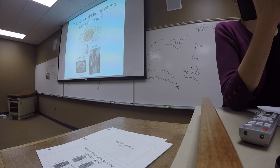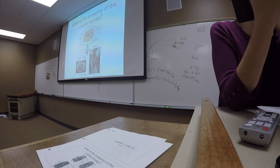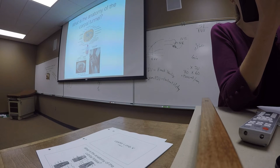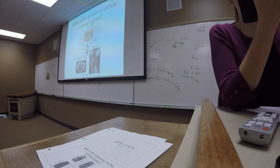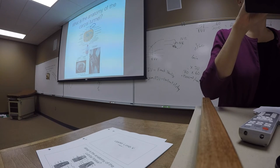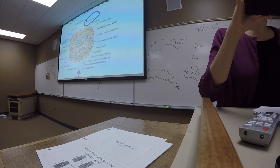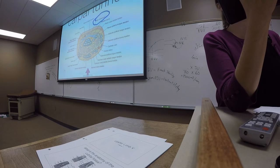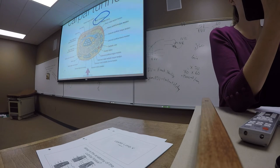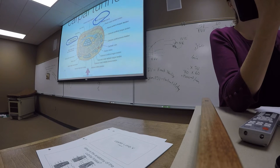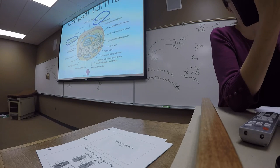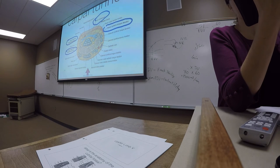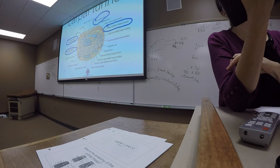For the carpal tunnel: we have our carpal arch (those carpal bones) and then the flexor retinaculum over the top of it, which forms the anterior wall. Running through the carpal tunnel we have the flexor digitorum superficialis (our intermediate layer muscle), as well as the flexor digitorum profundus and flexor pollicis longus tendons from our deep anterior compartment muscles.